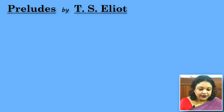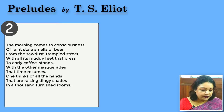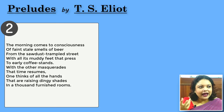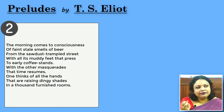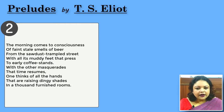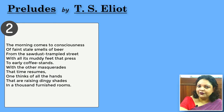Coming to the second prelude: while the first prelude talks about a street of London in the evening, the second prelude opens — 'The morning comes to consciousness of faint, stale smells of beer.' We had some expectation that the evening was stale, the evening was sordid, but maybe when morning comes, things will be more joyful. But no — because the hangover is worse the next day.